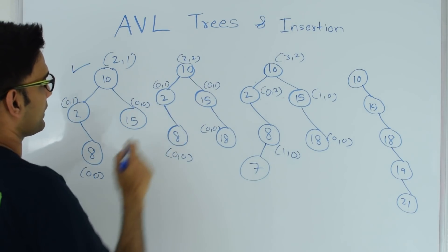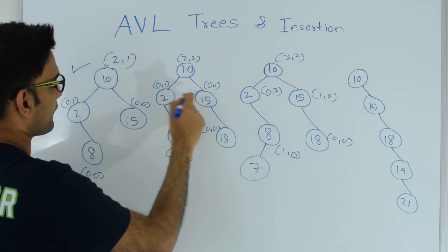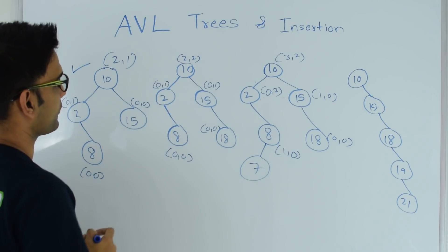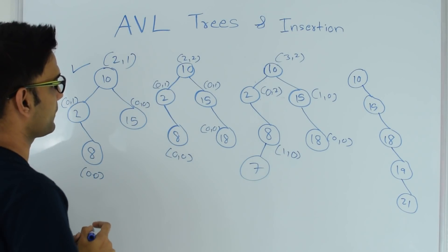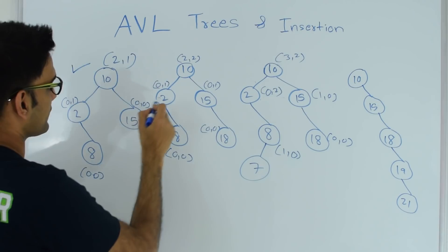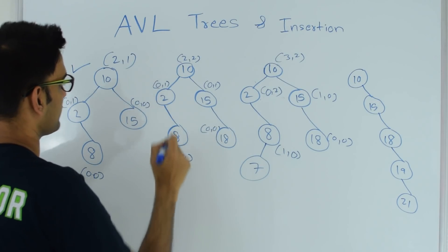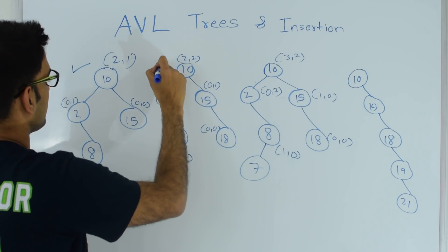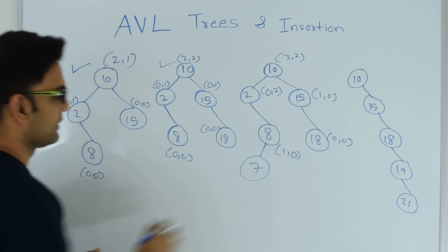For the next tree, for 10 height of the left subtree is 2 and height of the right subtree is 2, so 10 does not violate the property. 2 does not, 8 does not, 15 does not and 18 does not. So this is also an AVL tree.